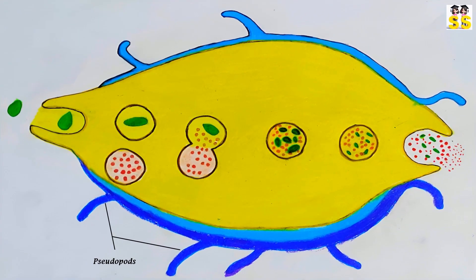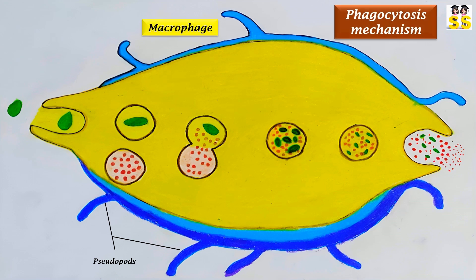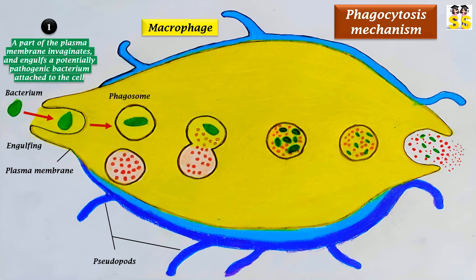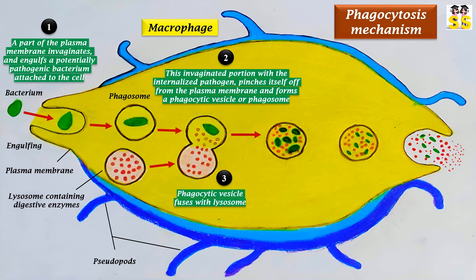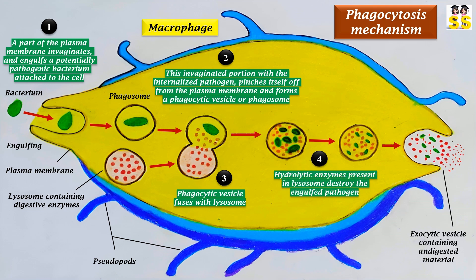Let's take a closer look at how lysosomes use their hydrolytic enzymes to destroy pathogens that enter the cell. The figure shown here illustrates the phagocytosis mechanism occurring in a macrophage. A portion of the plasma membrane invaginates and engulfs a pathogenic bacterium. This invaginated portion with the internalized pathogen pinches itself off from the plasma membrane and forms a phagosome. Thereafter, this phagocytic vesicle fuses with a lysosome, and the engulfed pathogen is degraded by the hydrolytic enzymes present in the lysosome. The exocytic vesicle then expels the undigested waste products outside the cell via exocytosis.